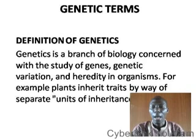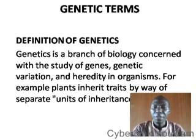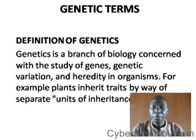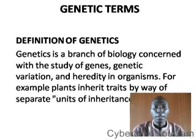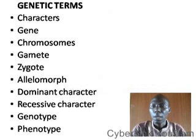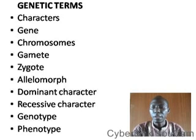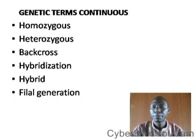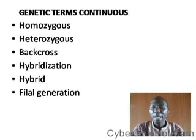Plants inherit traits by way of separate units of inheritance — another word for traits is characters. Now let's go into the genetic terms properly. We have: characters, gene, chromosome, gametes, zygotes, allelomorph, dominant character, recessive character, genotype, phenotype, homozygous, heterozygous, back cross, hybridization, hybrid, and filial generation.